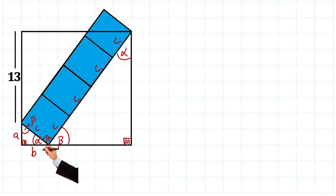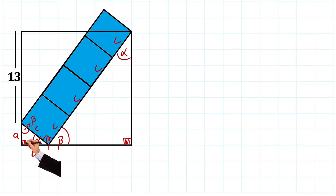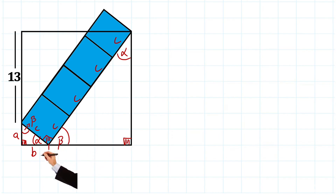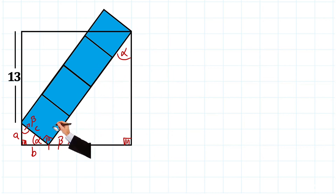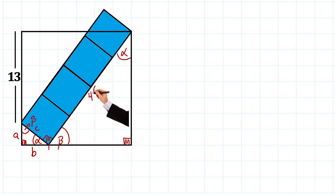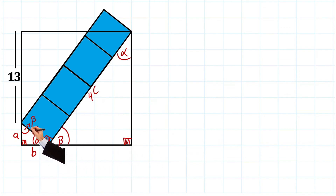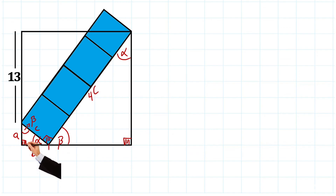Pay close attention to these two triangles — to this large triangle and to this small triangle. They are similar triangles because they have the same angles: 90, alpha, beta and 90, alpha, and beta. Then pay attention: this hypotenuse here of this large triangle would be c plus c plus c plus c — in other words, the entire hypotenuse is four times c.